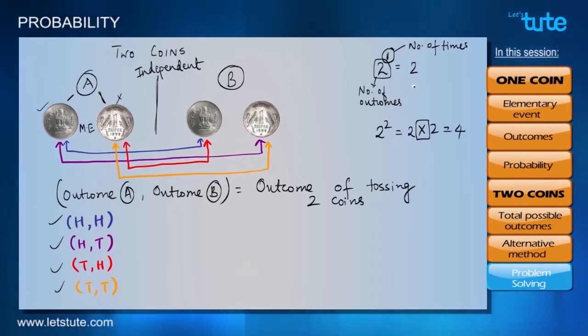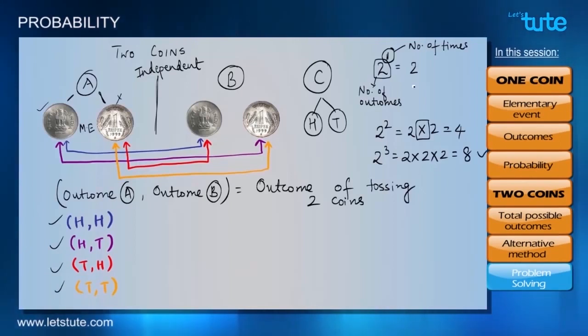Similarly, if there were 3 coins, let's say coin C, which will again have outcome heads and tails, then the total possible outcomes will be 2 raised to power 3 equal to 2 multiplied by 2 multiplied by 2 equal to 8 and not 2 plus 2 plus 2 equal to 6.